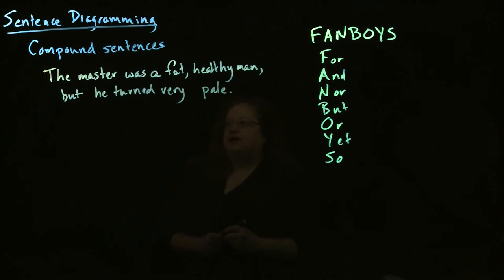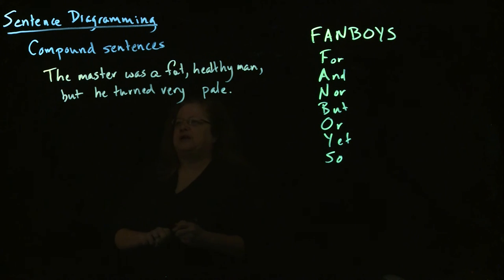So what we have here, we have two sentences that are stuck together. The first sentence, the master was a fat, healthy man. The second sentence, he turned very pale. And they're connected using a comma plus one of the fanboys. So we know now we're going to have two sentences to look at, two frameworks. And the question then is, how are we going to connect them? So let's start by drawing our two frameworks.